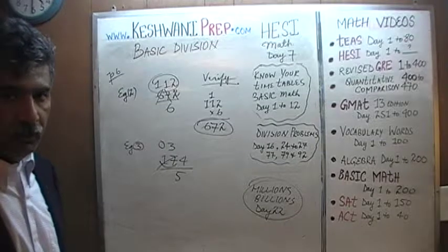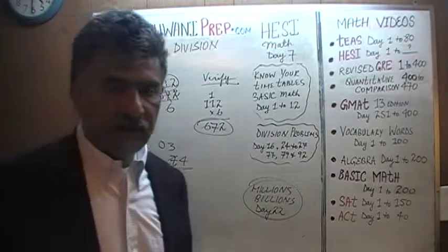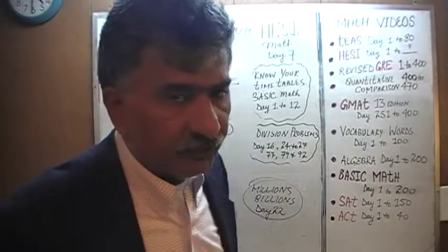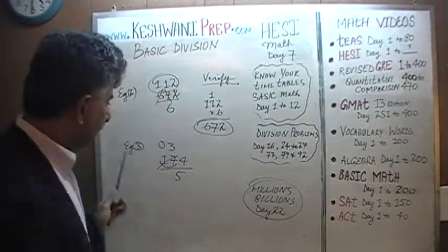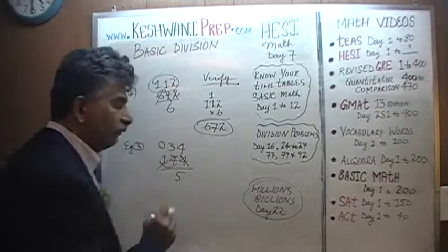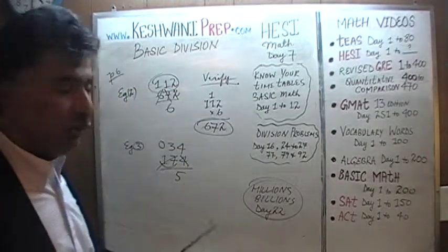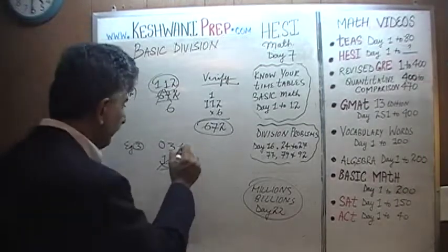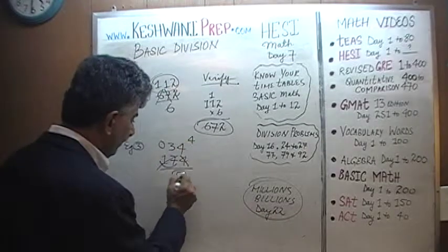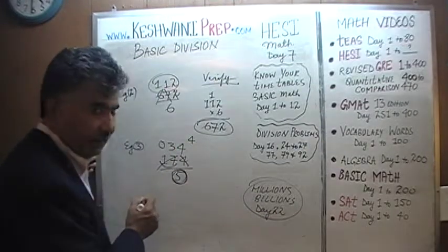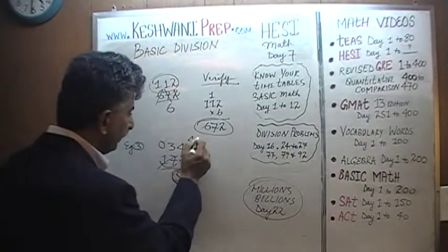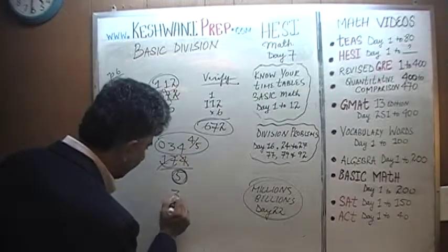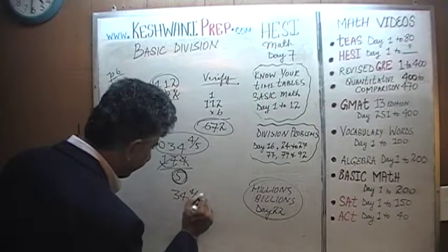How many 5s does 24 have? 24 has four 5s. 4 fives are 20. When we had 24, we used only 20, so we have a remainder of 4. That remainder of 4 has to be divided by 5, because that's what we're dividing by. So that 4 has to be divided by 5, and the final answer is 34 and 4 fifths.